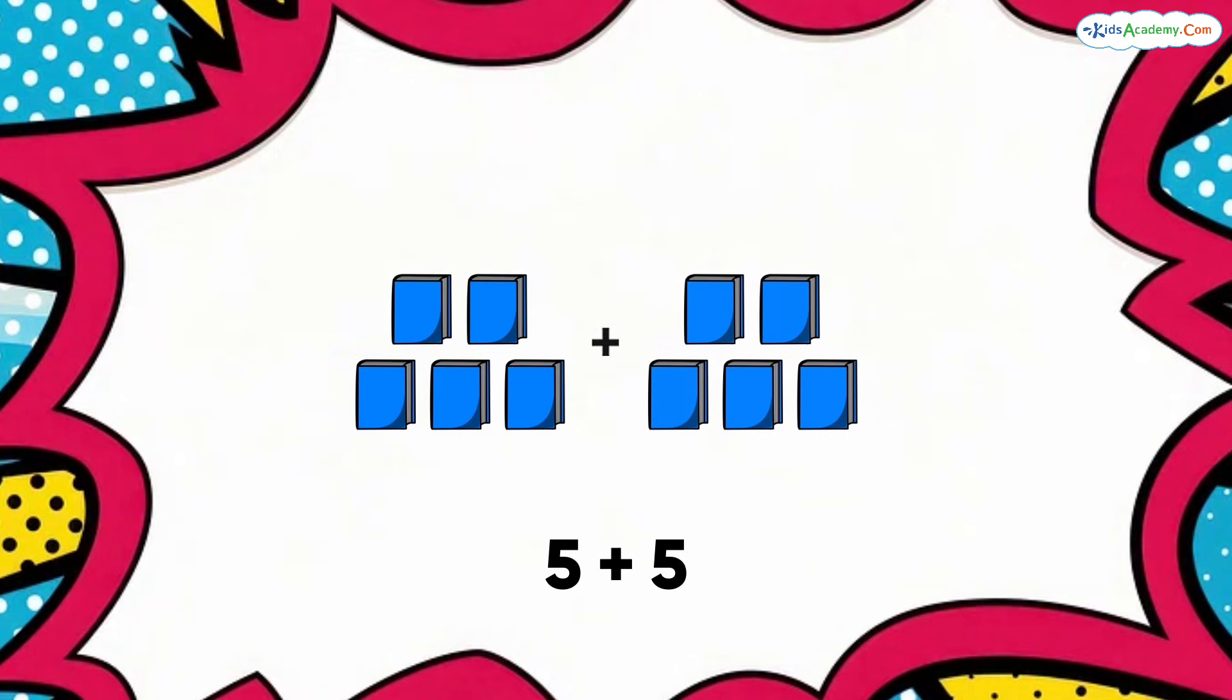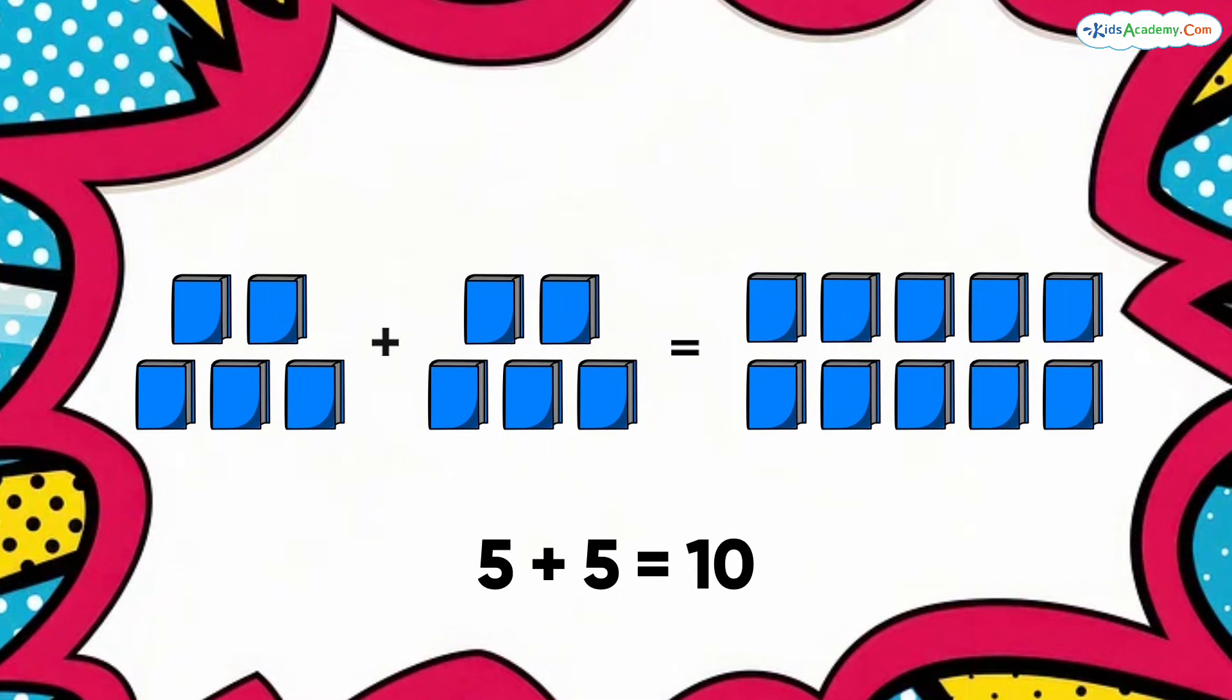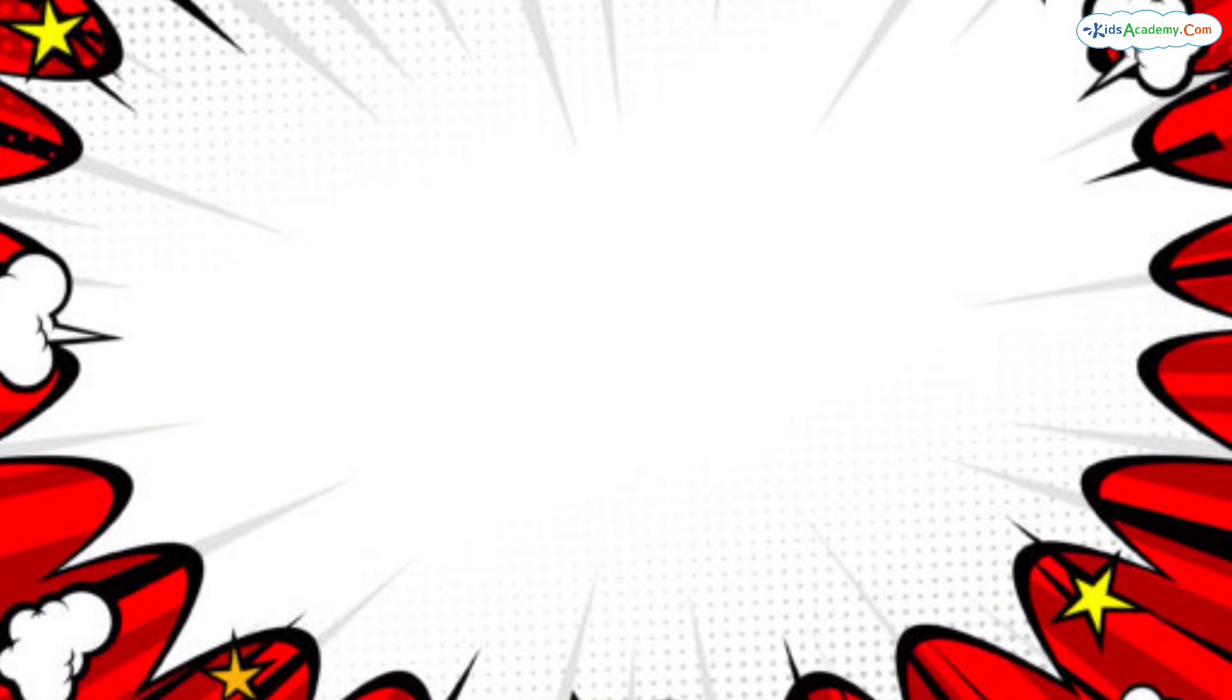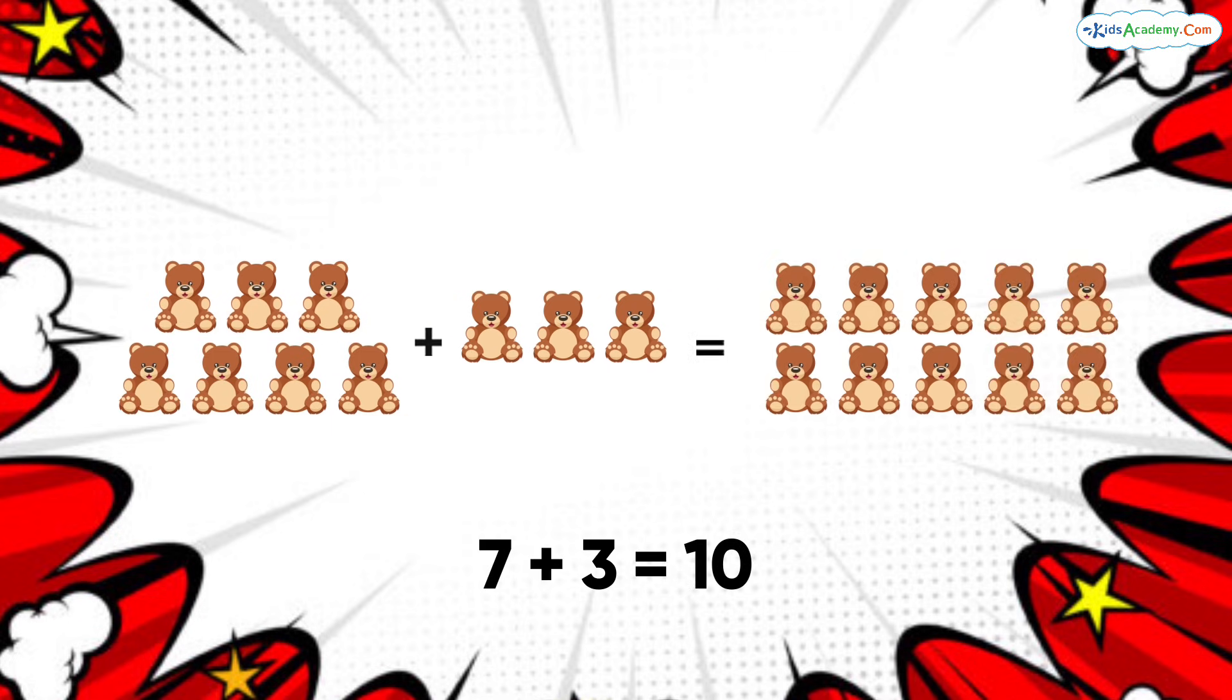Let's do a couple of more additions. What is 5 plus 5? Take your time. Yes, you got it right. 5 plus 5 equals 10. Let's do one more. What is 7 plus 3? Think about it. 7 plus 3 equals 10. Great job.